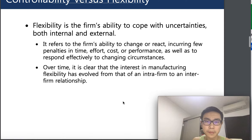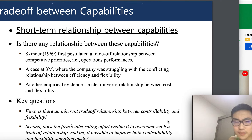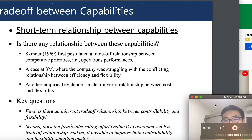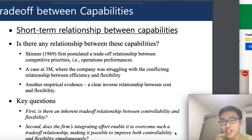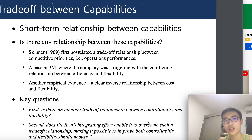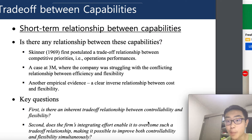A trade-off relationship means when one variable increases, the other decreases — an inversely proportional relationship. Skinner in 1969 first postulated a trade-off relationship between competitive priorities, for example operations performance, and the case at 3M where the company was struggling with a conflicting relationship between efficiency and flexibility.